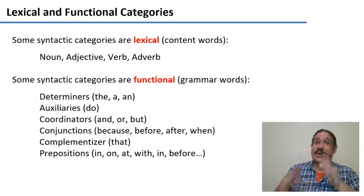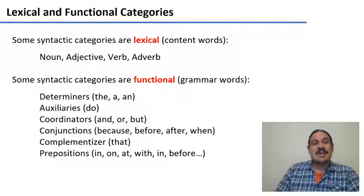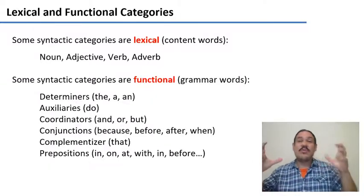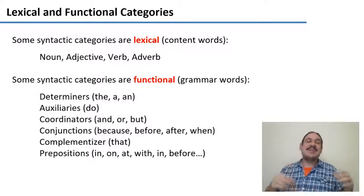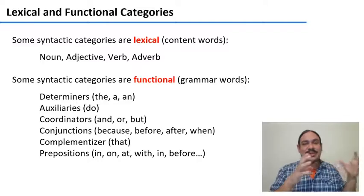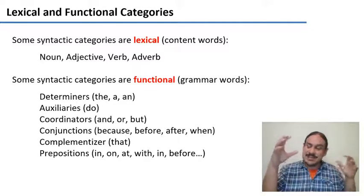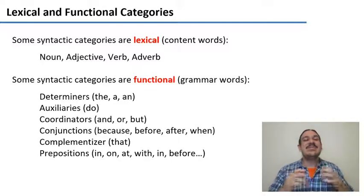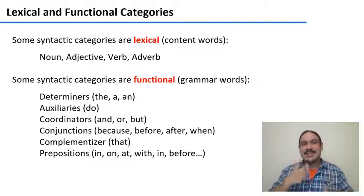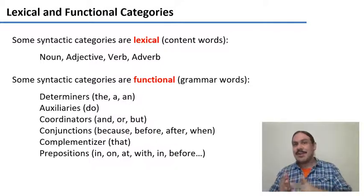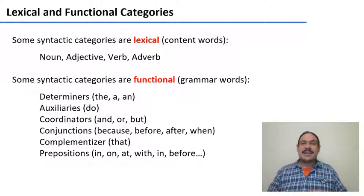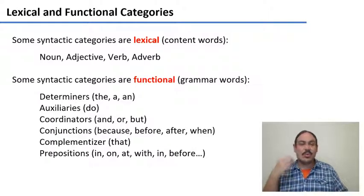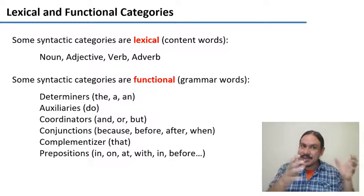Some syntactic categories are lexical — we also call them content words. This means that they are full of meaning. For example, a noun like 'dog' or 'cat' is full of meaning because it refers to a particular creature. We have adjectives like big, fluffy, small; verbs like eat, walk, drink; and adverbs like 'yesterday' or 'now.' All these words have a lot of meaning packed into them.